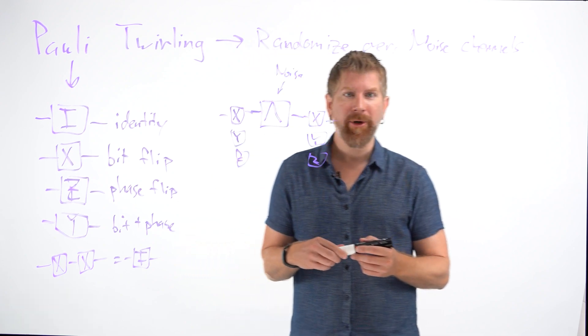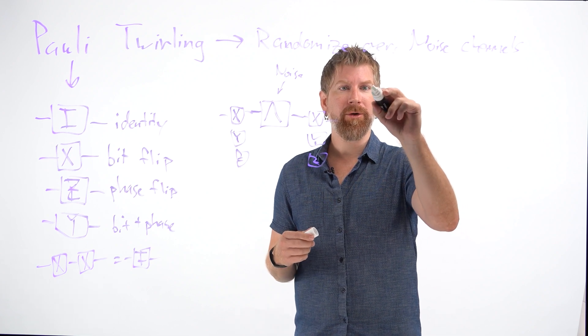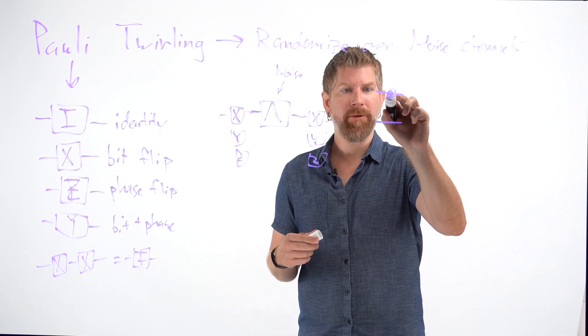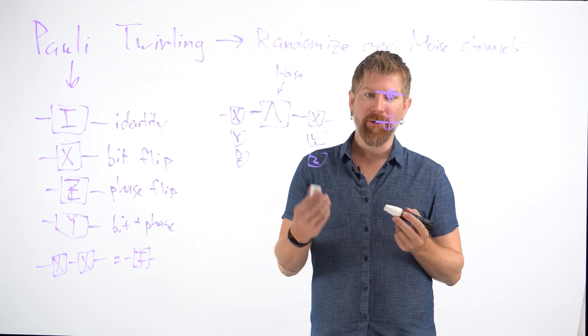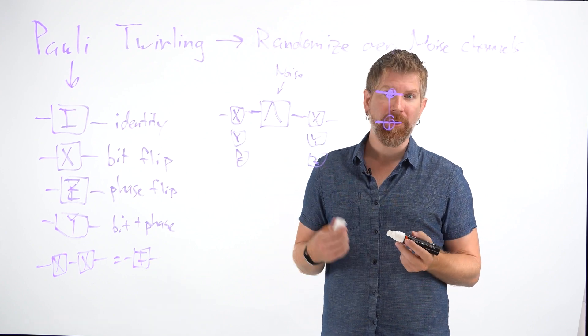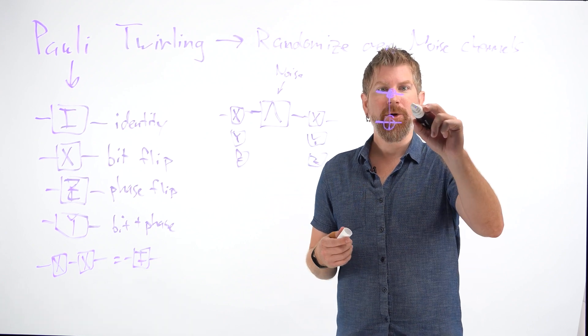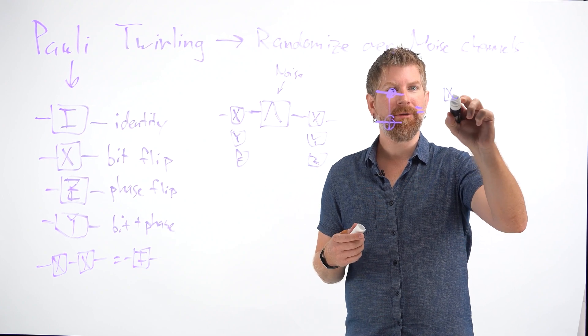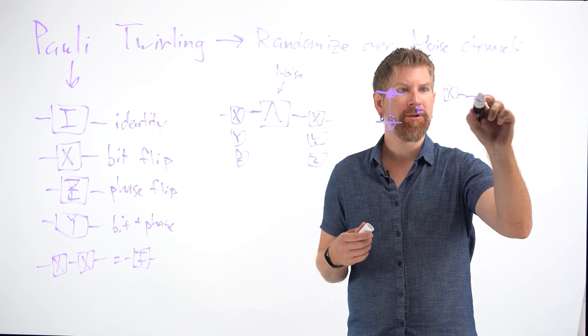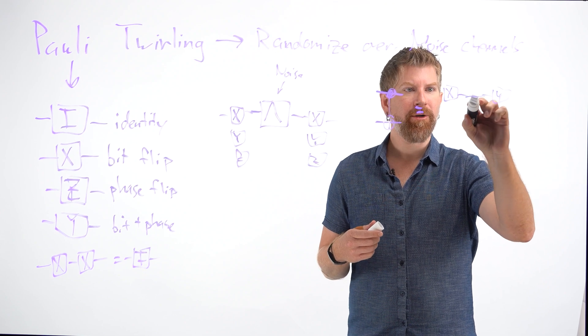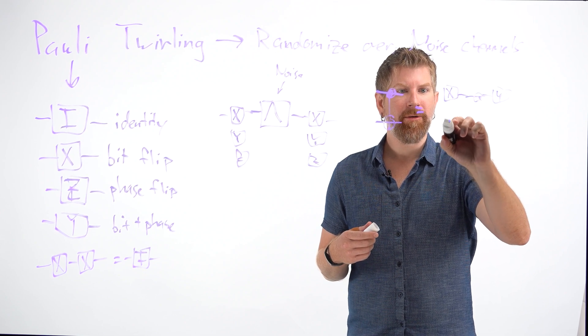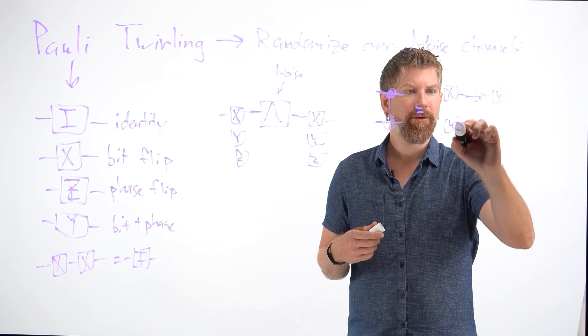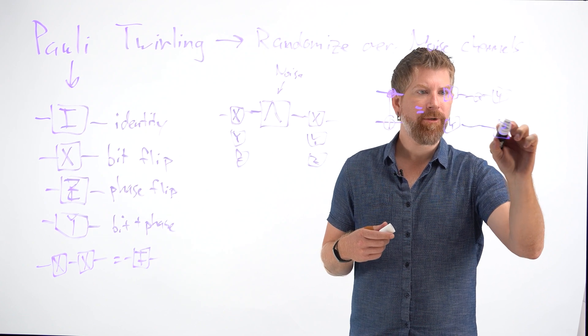So how does this work in practice? Well, we have some sort of operation. So let's say a CNOT, for example. These are where a lot of noise takes place, so we're definitely going to want to twirl the CNOTs. Well, we can rewrite it and express it as a different kind of operation. So this is actually the same as an X, Y over here and then Y, Z over here.